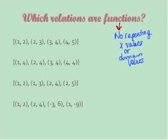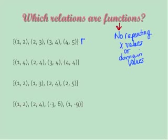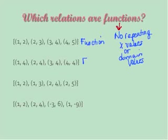If we look through this list, we want to check the x values of each ordered pair. We have a 1, a 2, a 3, and a 4 — that means this is a function; we have no repeating x values. Looking at the second one, we have 1, 2, 3, and 4, so this also is a function.